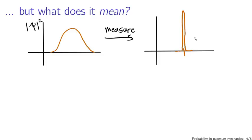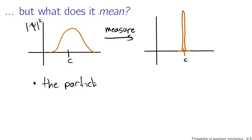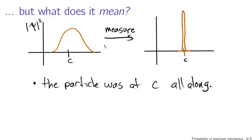One thing you could think, just intuitively, is that this probability distribution wasn't really all the information that was there — that really the particle was there all along. Let's say this is point C. One interpretation is that the particle really was at C all along. That would mean this distribution reflects ignorance on our part as physicists, not fundamental uncertainty in the physical system. This turns out not to be true — you can show mathematically and in experiments that this is not the case.